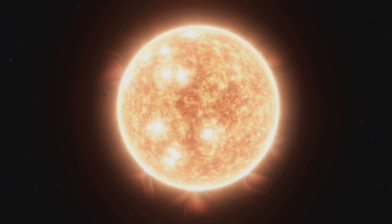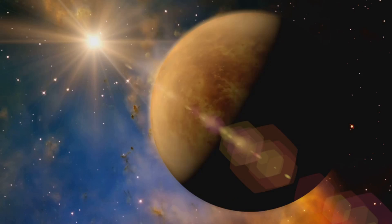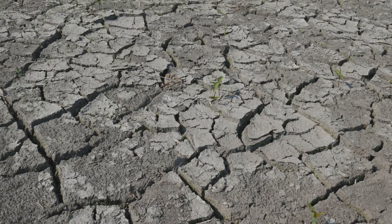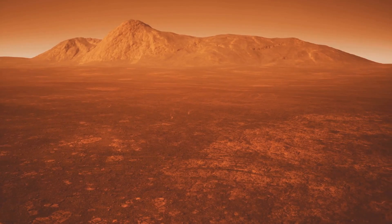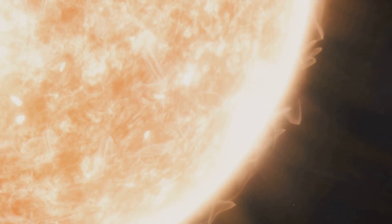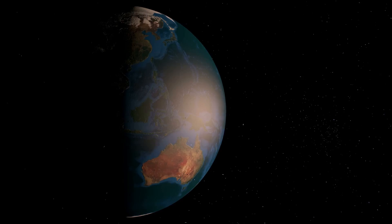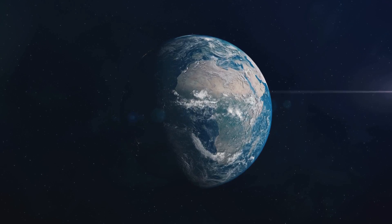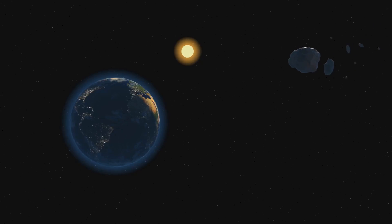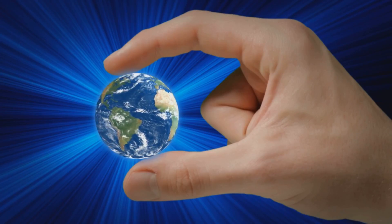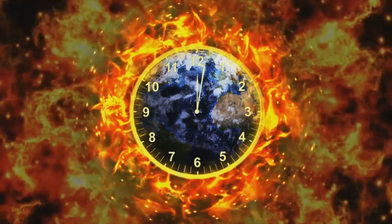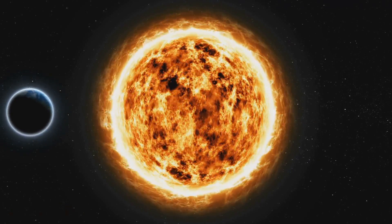In about a billion years, the sun will be 10% brighter, enough to trigger a runaway greenhouse effect. The oceans will boil away, and Earth will become a hot, dry, sterile world. Long before the sun becomes a red giant, its increasing brightness will make Earth uninhabitable. The habitable zone will move outward, leaving our planet behind. This distant future reminds us how fragile our world is. Life's window on Earth is finite, dictated by the sun's unstoppable evolution.